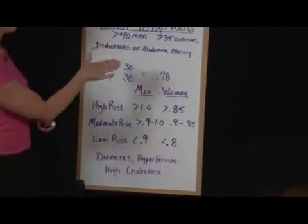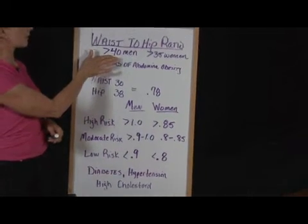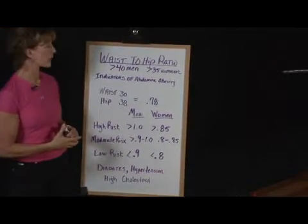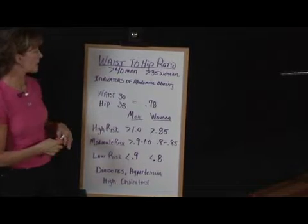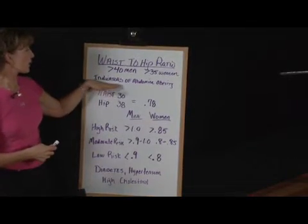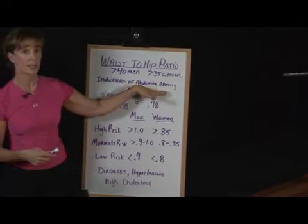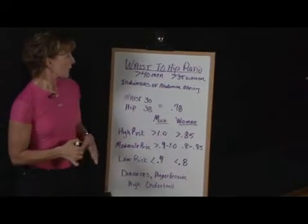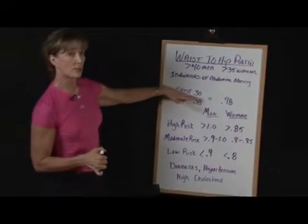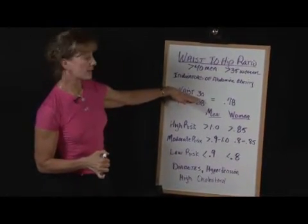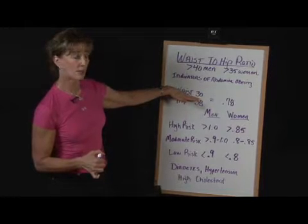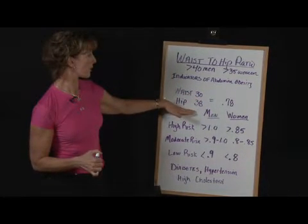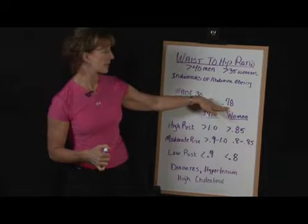For men, if you have a waist measurement greater than 40, or women greater than 35, this is a great indicator that you have abdominal obesity and you are at risk for disease. Basically, we take the waist measurement — this individual has a waist of size 30 — and divide it by the hip measurement of 38, and we get 0.78.